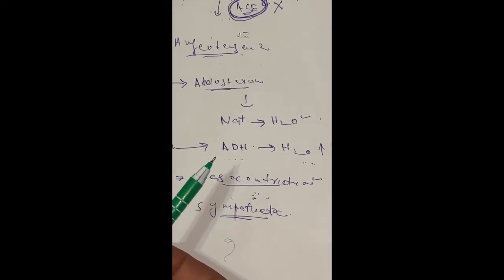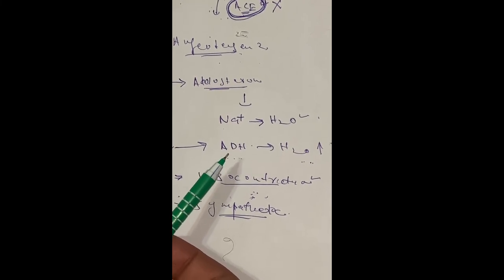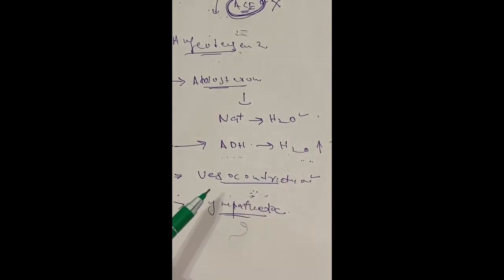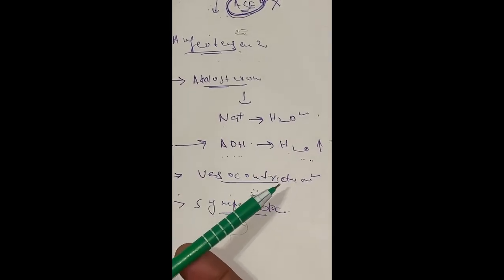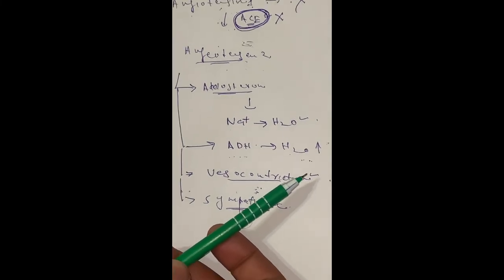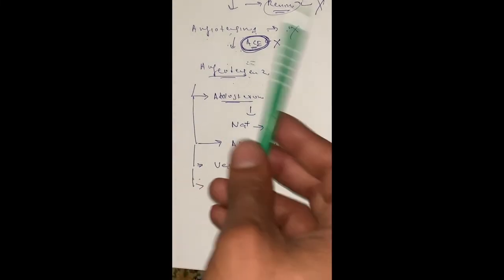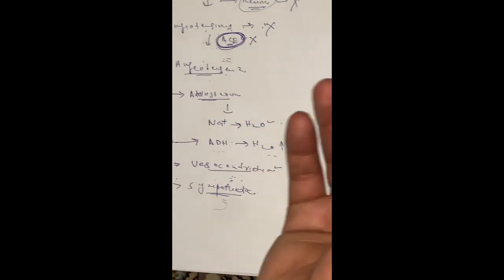Angiotensin II also acts on the posterior pituitary gland, causing the release of ADH — the anti-diuretic hormone — so water reabsorption occurs and venous return increases. Vasoconstriction causes an increase in total peripheral resistance. When total peripheral resistance is high, blood pressure is also high. Through all these mechanisms, our blood pressure is controlled.